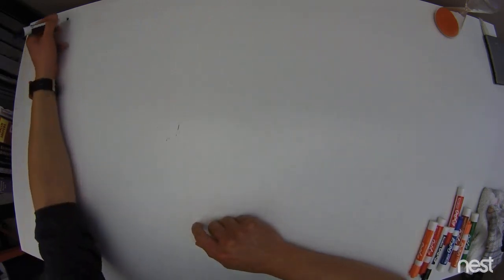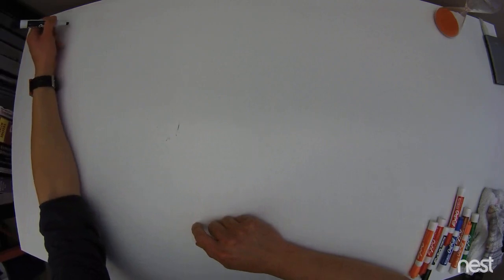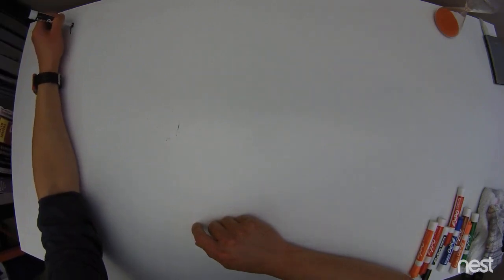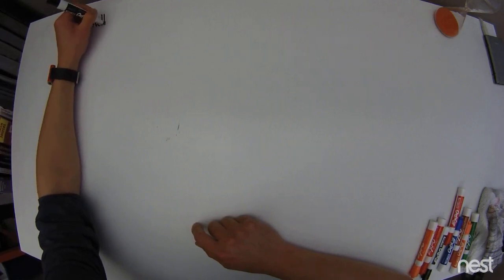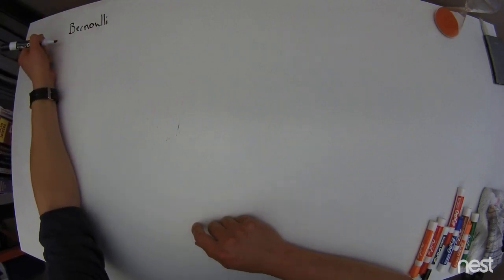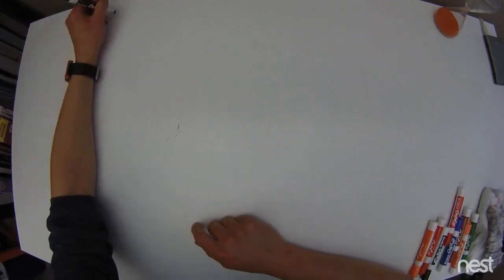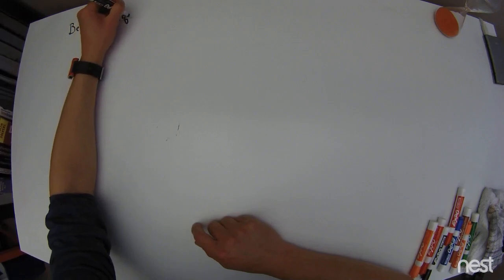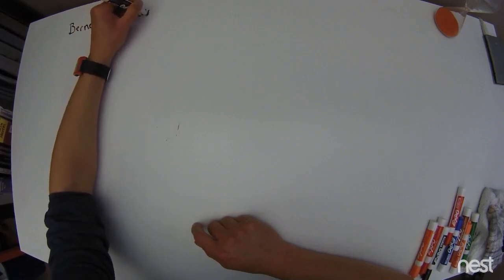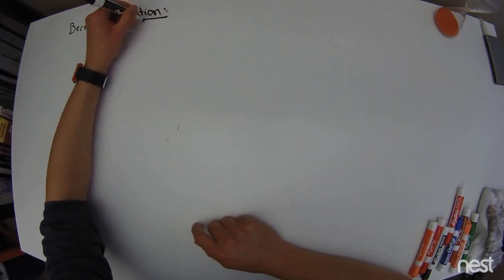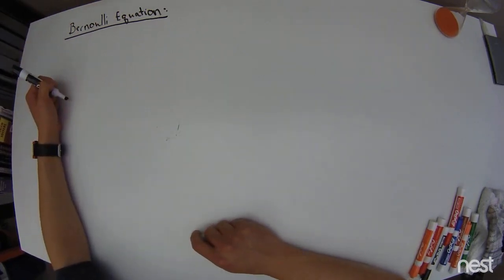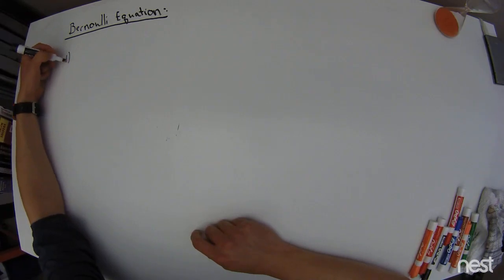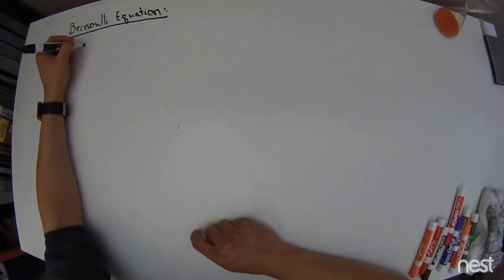Today in class we brought up the idea of a Bernoulli equation, and there are some problems on this homework assignment associated with that. What I'm going to do with this video is outline the general procedure associated with this special type of equation known as the Bernoulli equation. Let's call equation one this Bernoulli equation.